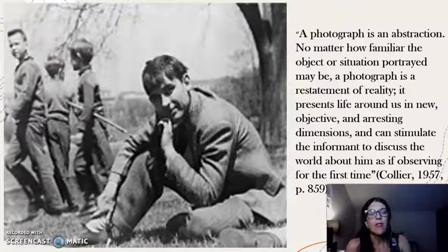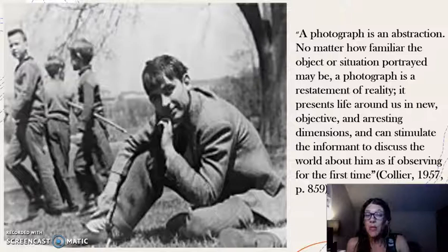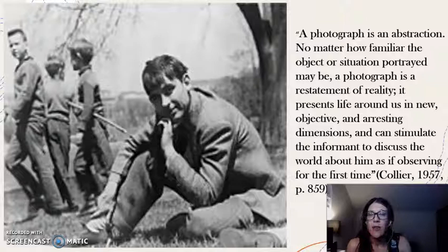In 1957, an anthropologist named John Collier Jr. was conducting research on the impact of environmental factors on mental health in the Maritimes in Canada. It was during this project that Collier experimented with using photography in interviewing participants, and published a paper on photography and anthropology in which he coined the term photo elicitation. Collier noted that the photograph is a restatement of reality that presents life in new and objective dimensions, and can stimulate the informant to discuss the world about him as if observing for the first time.